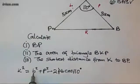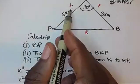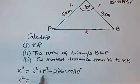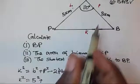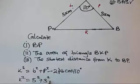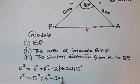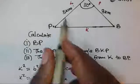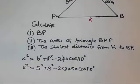Now we substitute the values. b is 5 kilometres and p is 3 kilometres, so we write: k² = 5² + 3² − 2 × 3 × 5 × cos(110°).